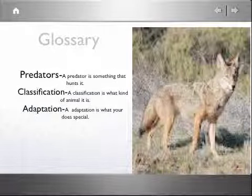Glossary. Predator: a predator is something that hunts it. Classification: a classification is what kind of animal it is. Adaptation: an adaptation is what your animal does special.